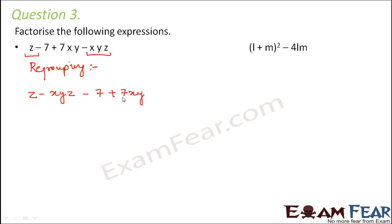That's because 7 and 7xy have 7 in common. For the first two terms, z is the common factor, so you are left with 1 and -xy. Similarly, 7 is the common factor for these two terms. So you are left with 1 and -xy.